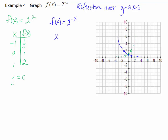Let's check that by altering the ordered pairs. When you reflect over the y-axis, you change the sign of every x value, so your y values remain the same. Where I had a negative 1, I'm now going to have a 1. The opposite of 0 is still 0. The opposite of 1 is negative 1. Now let's check that these three points are on our graph: over 1, up one-half — yes; 0, 1 — yes; negative 1, up 2 — yes.